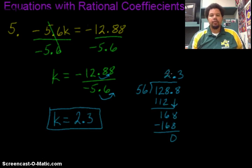So I get 2.3 as my answer. So k equals 2.3. Alright. So hopefully this helps you out about equations with rational coefficients.